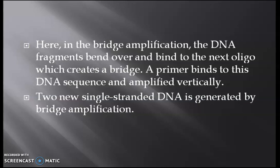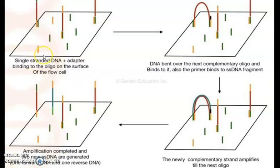A primer binds to this DNA sequence and it is amplified. In this way, two new single-stranded DNAs are generated by bridge amplification. You can see the library preparation and then the cluster generation — bridge amplification with DNA bending over to the next complementary oligo. After the amplification process is completed, two new single-stranded DNAs are generated: one is the forward DNA and one is the reverse DNA.